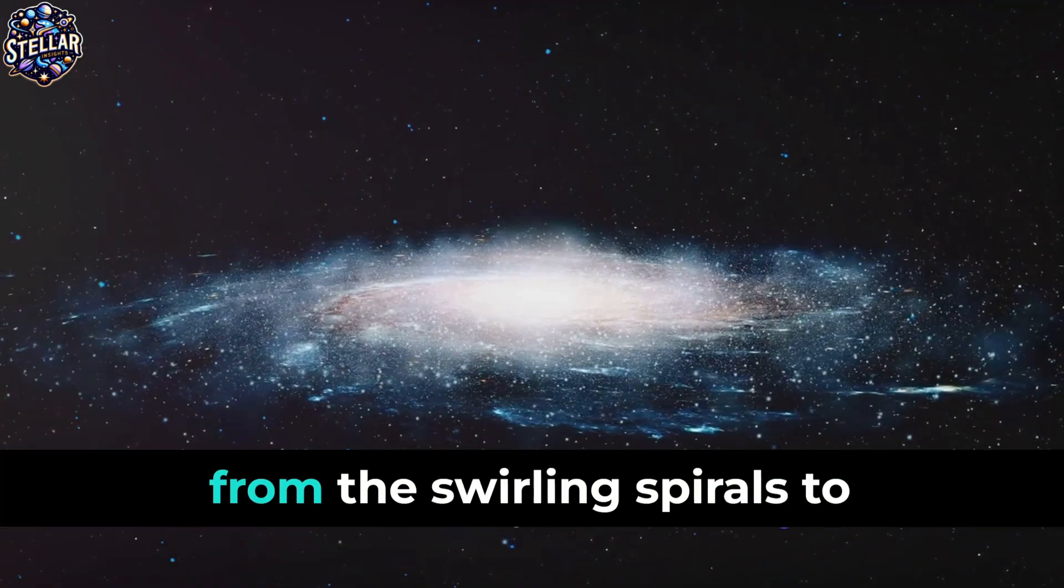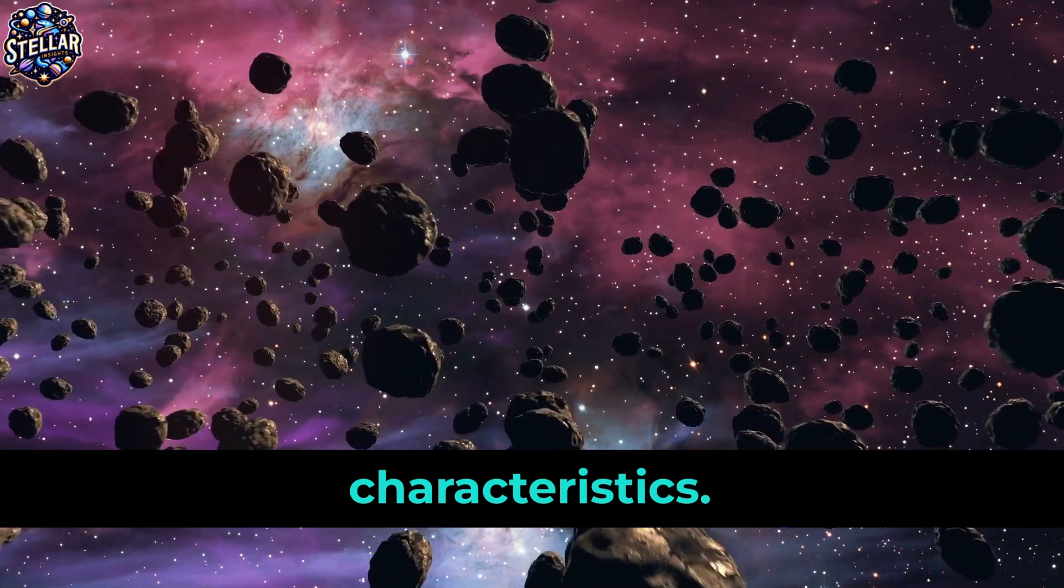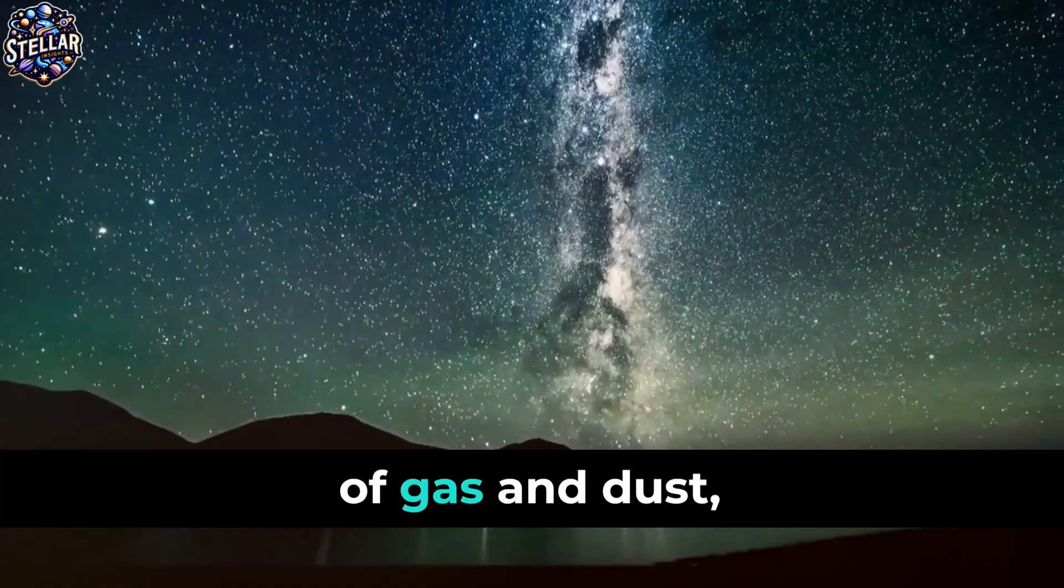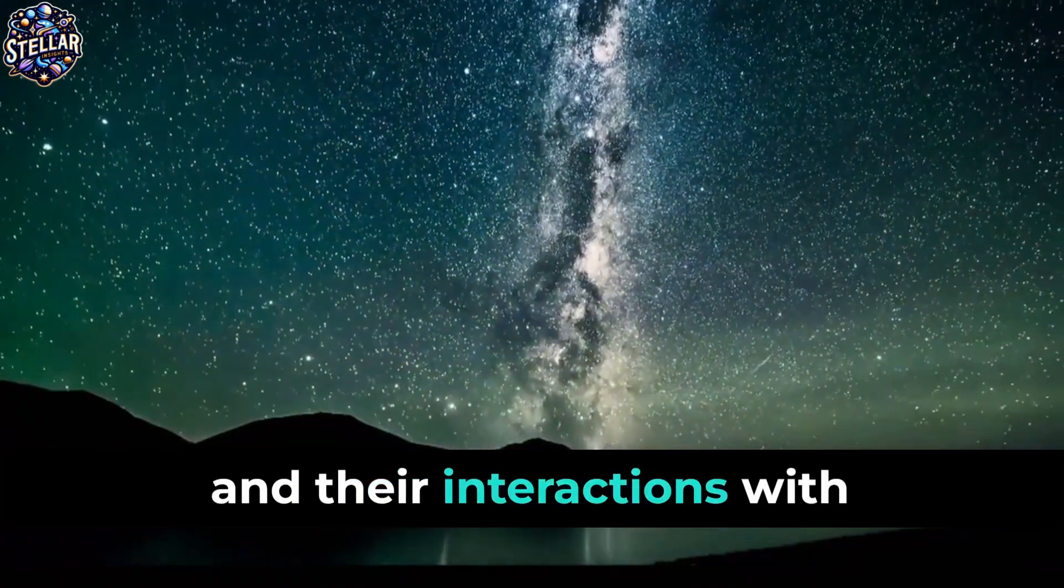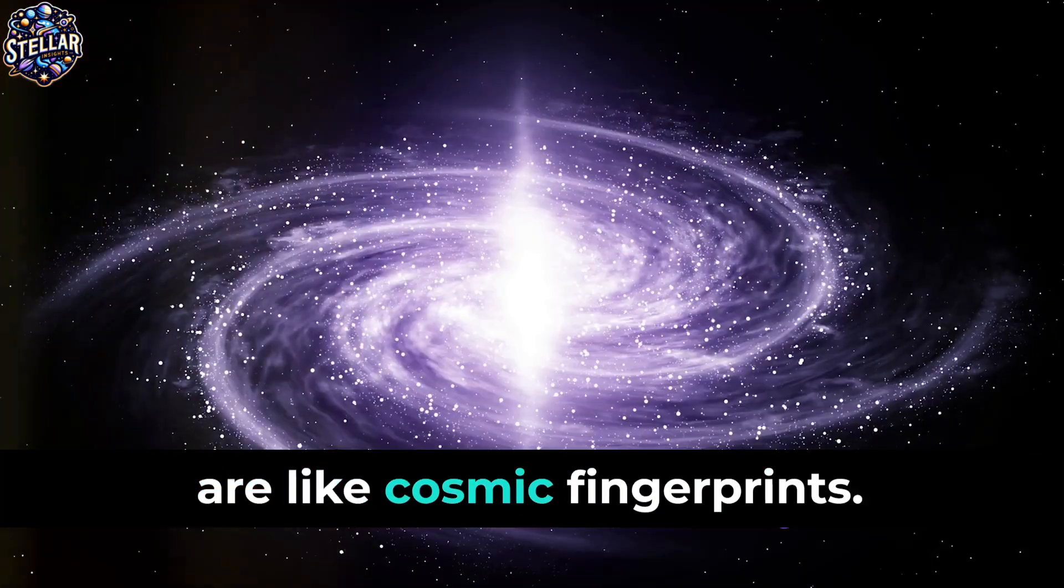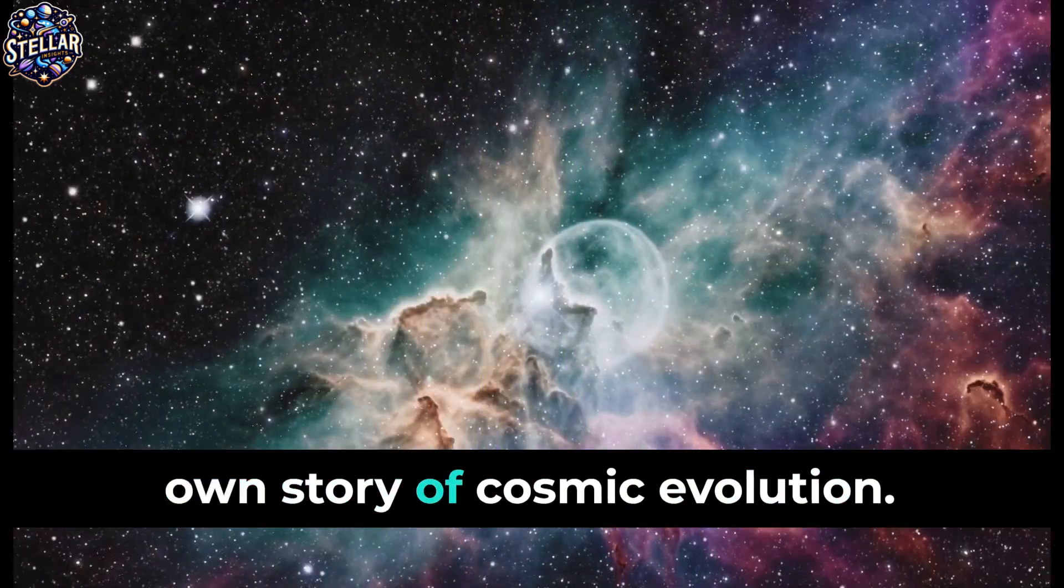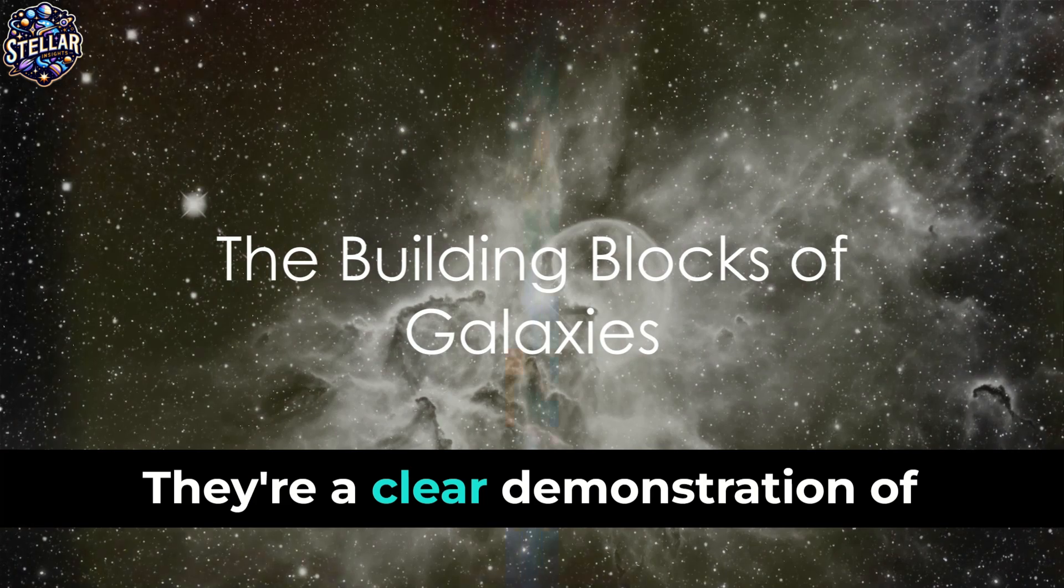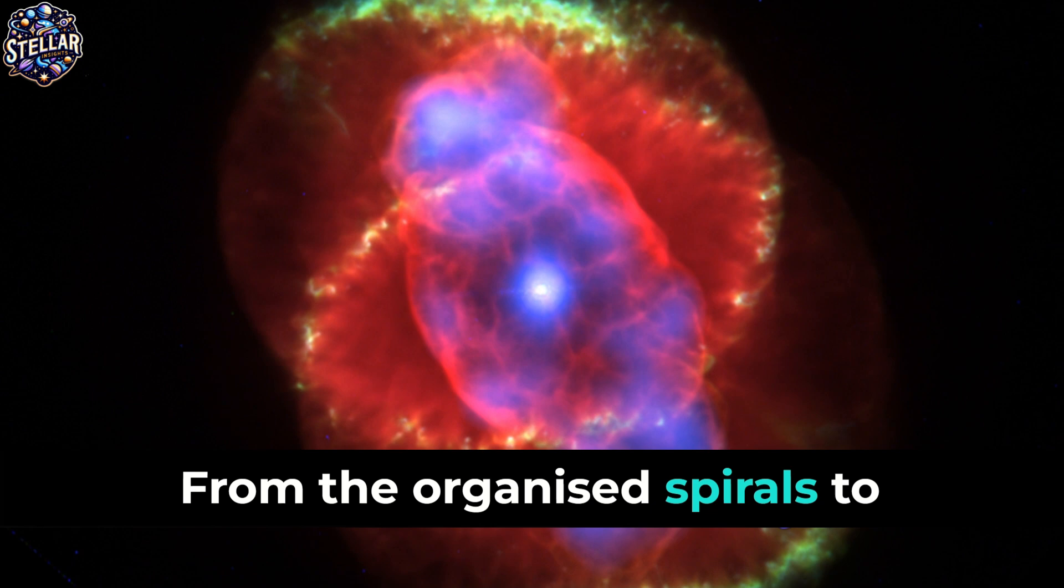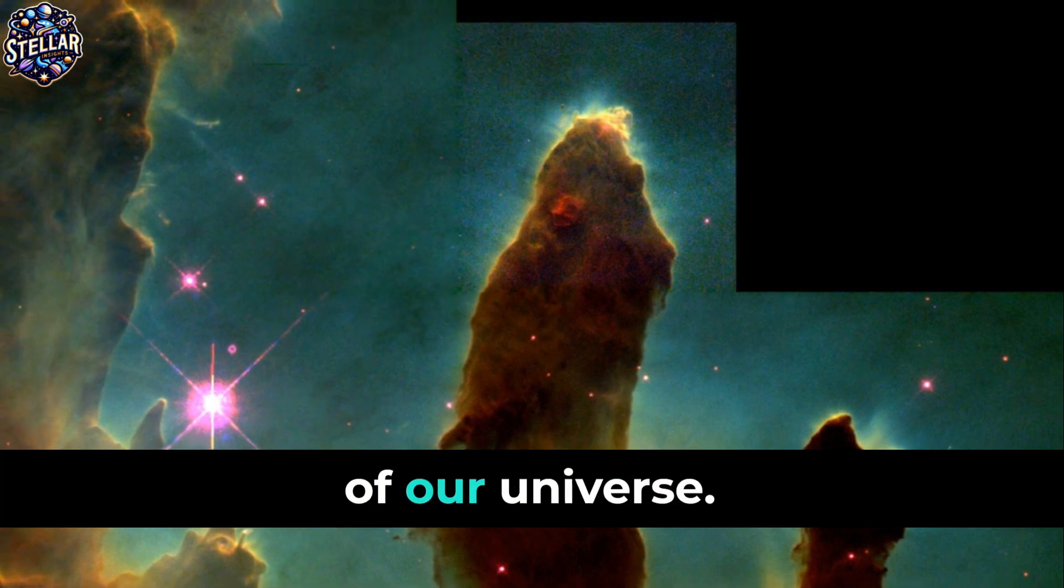Each of these galaxy types, from the swirling spirals to the amorphous irregulars, has its own unique characteristics. These differences are largely due to their star composition, the presence or absence of gas and dust, and their interactions with other galaxies over billions of years. In essence, the diverse types of galaxies are like cosmic fingerprints. Each one unique and telling its own story of cosmic evolution. They're a clear demonstration of how varied and complex the universe can be. Each type of galaxy is a testament to the incredible diversity and complexity of our universe.